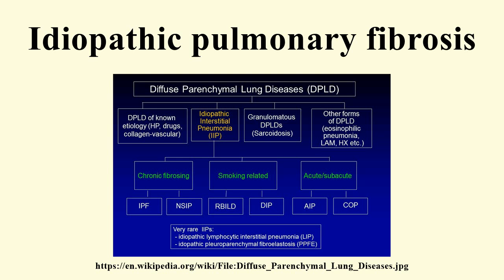Chest X-rays are useful in the follow-up routine of IPF patients, but plain chest X-rays are unfortunately not diagnostic. They may reveal decreased lung volumes, typically with prominent reticular or interstitial markings near the lung bases. Radiological evaluation through HRCT is an essential point in the diagnostic pathway in IPF. HRCT is performed using a conventional computed axial tomographic scanner without injection of contrast agents, with evaluation slices of 1–2 mm. Typical HRCT of the chest in IPF demonstrates fibrotic changes in both lungs, with a predilection for the bases and periphery.